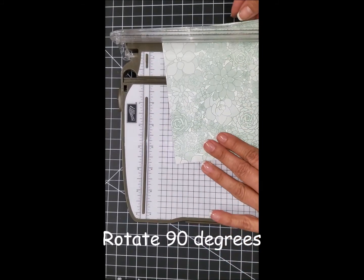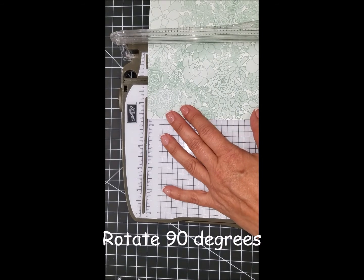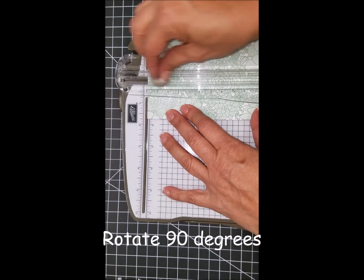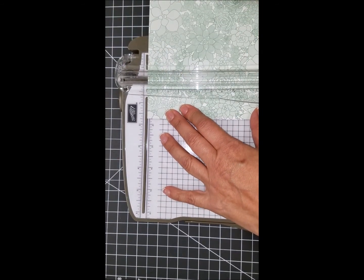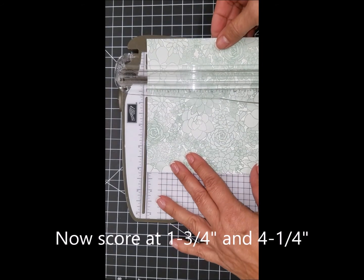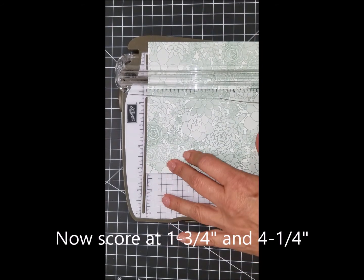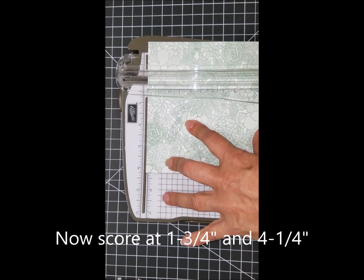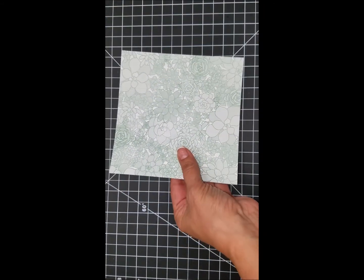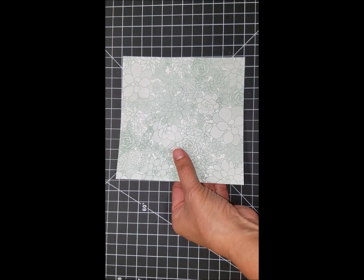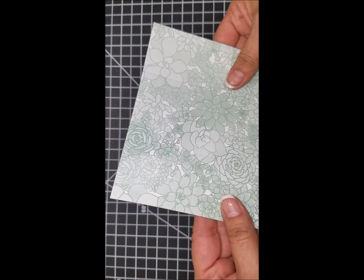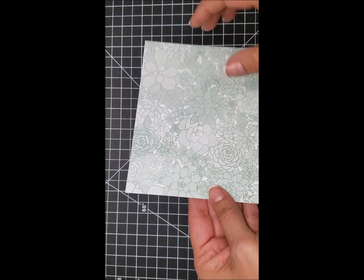We're going to rotate the paper 90 degrees and we're going to score again at one and three quarter, and scoot it down and score at four and one quarter. Okay, now you can put your stamp and trimmer up and we can go ahead and grab a bone folder to begin scoring on all those lines.